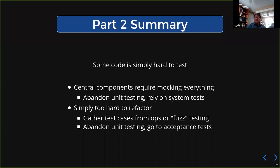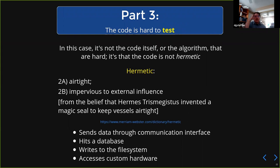Part three is really where I started thinking about all this — where the code is hard to test. This is also the chunk I've spent the least time on in the slides, so things might get a little grungy. The problem here is almost always that the code isn't hermetic. Hermetic — go to Webster's — airtight or impervious to external influence.